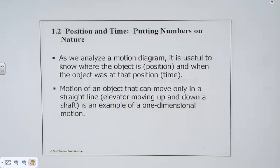So beginning an analysis of a motion diagram, we begin to study the object's position with respect to time. That motion of an object can move only in a straight line, thinking of like an elevator moving up and down a shaft. There is no possibility of moving it in any other direction but in a linear fashion. That's the focus of this particular chapter.